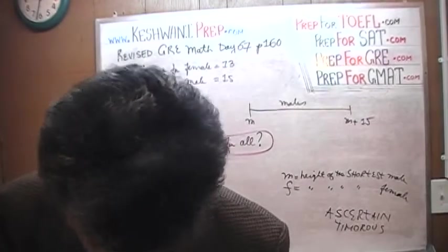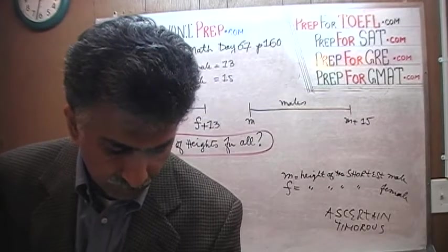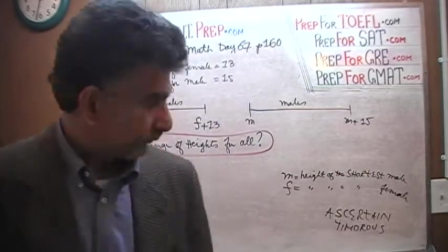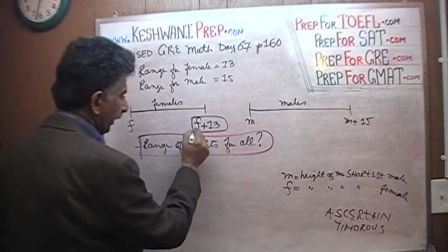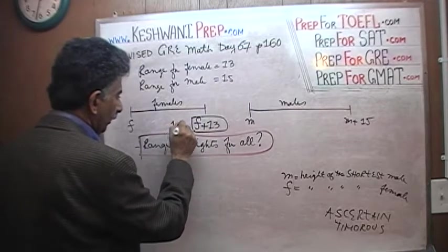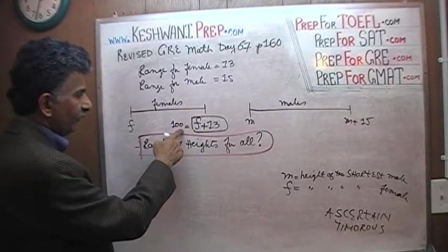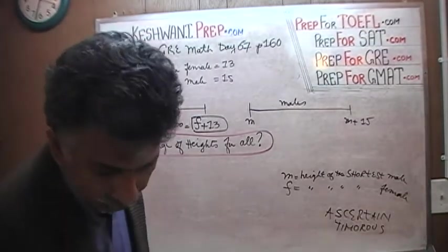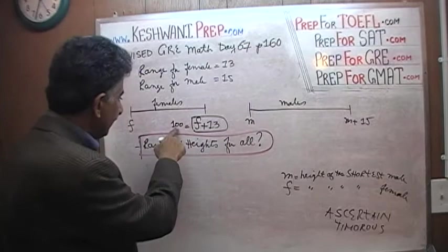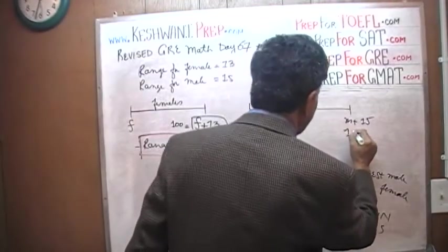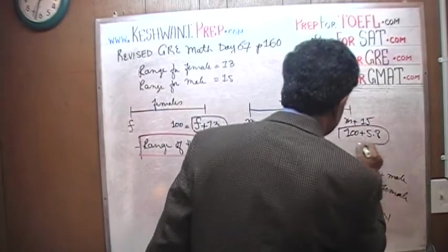The first statement says that the tallest male in the class is 5.8 inches taller than the tallest female in the class. Well this is interesting. I am going to pretend that the tallest female in the class is 100 meters or 100 inches. So if the tallest female in the class is 100, the first statement tells us that the tallest male must be 100 plus 5.8. So far so good?